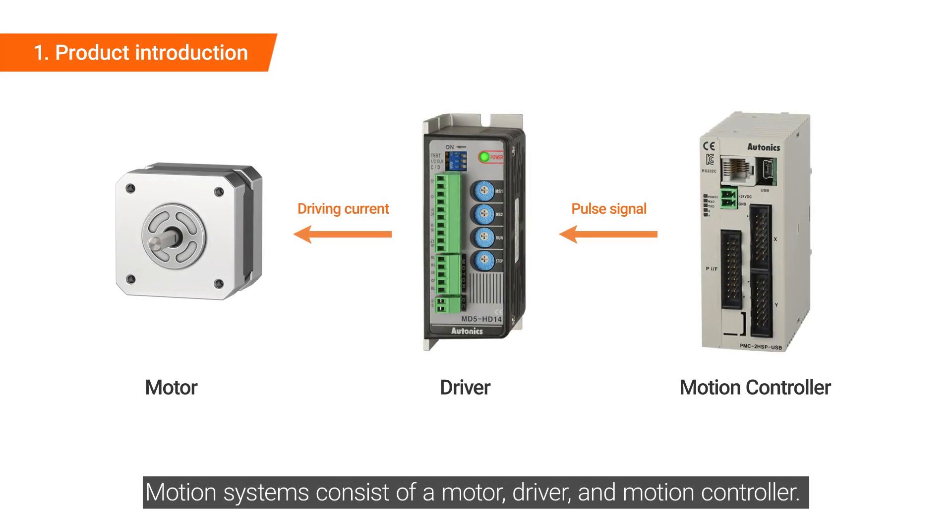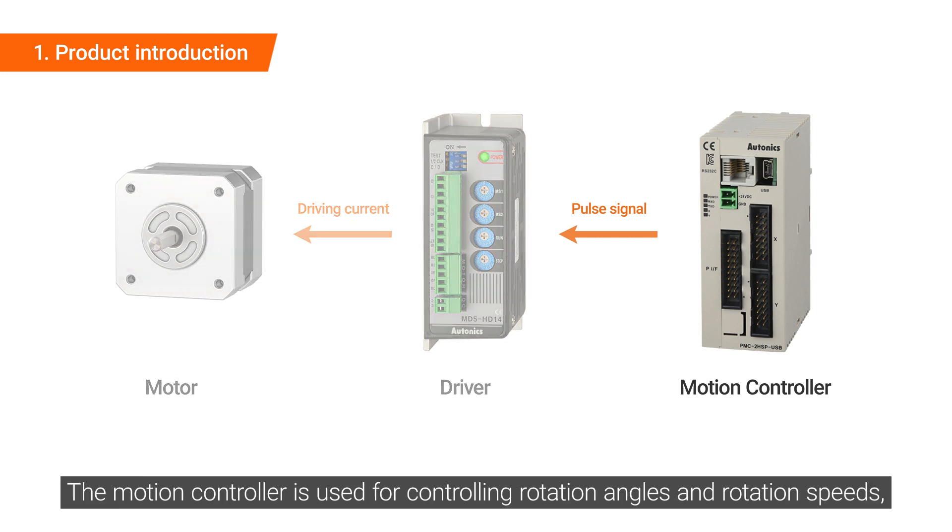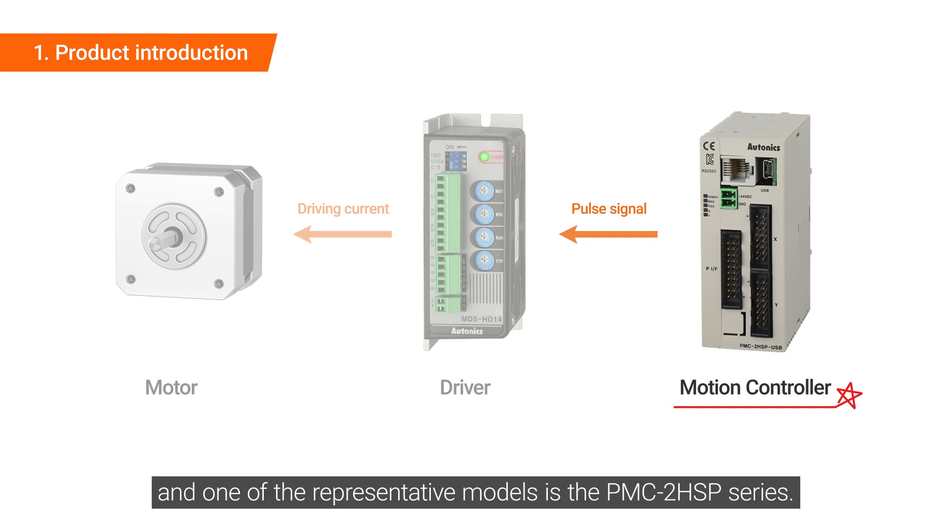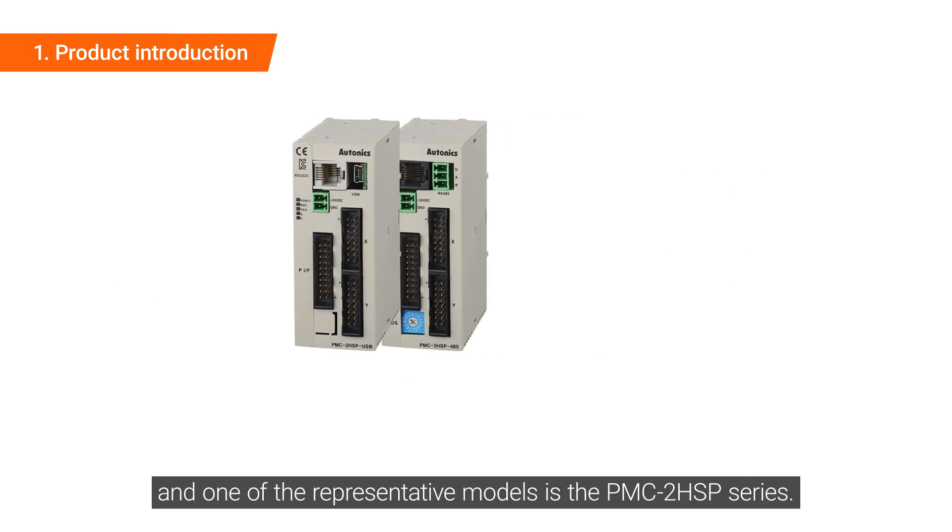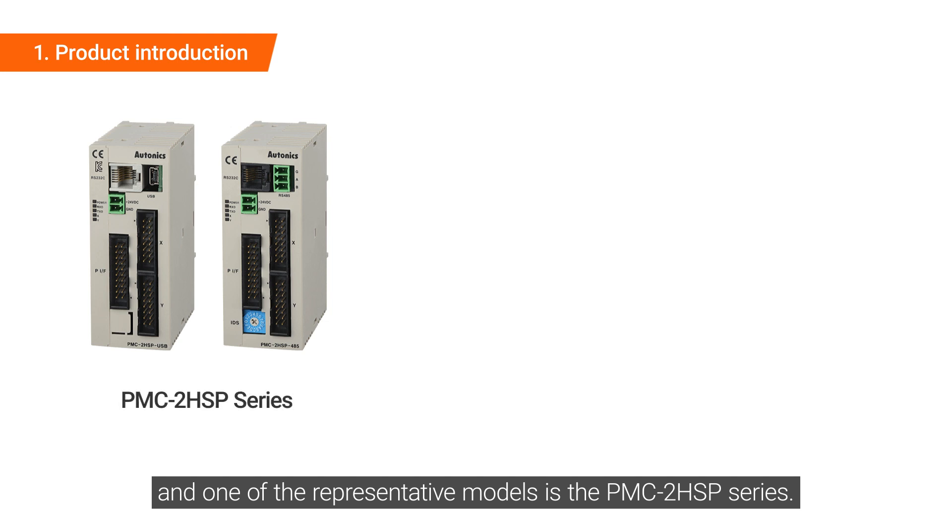Motion systems consist of a motor driver and motion controller. The motion controller is used for controlling rotation angles and rotation speeds, and one of the representative models is the PMC-2HSP series.